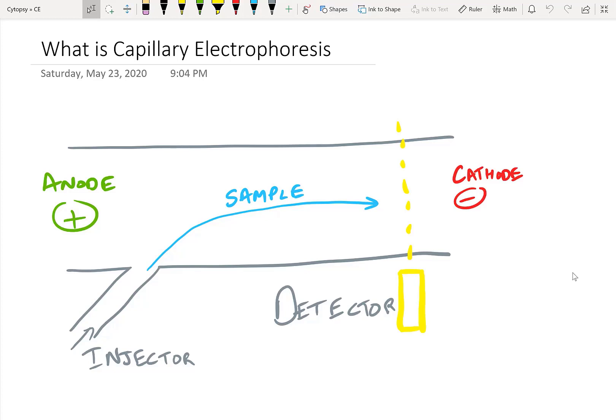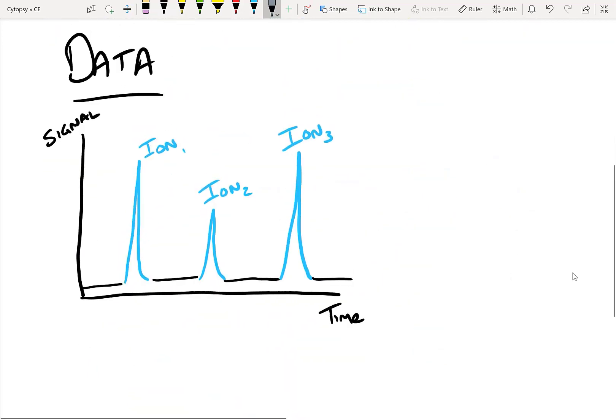Capillary electrophoresis is a method of separating out charged species inside a sample by having them migrate through an electric field. In this case, the sample is going towards the cathode, and as the sample is going towards the cathode, it's being detected. As the charged species are detected, you end up with signal like this.